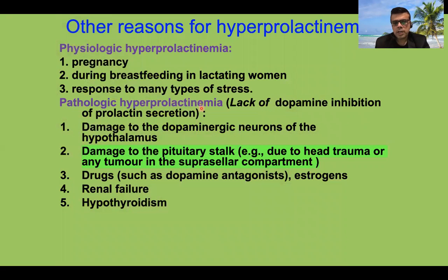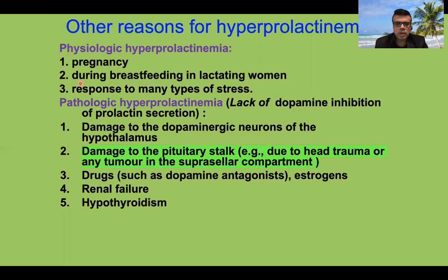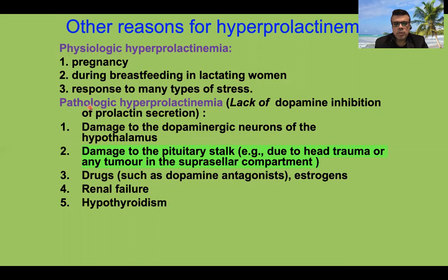There are many other causes of hyperprolactinemia. Physiological causes include pregnancy, in which prolactin levels are elevated, breastfeeding in lactating women, and response to various types of stress, which may also induce increased prolactin release from the anterior pituitary.